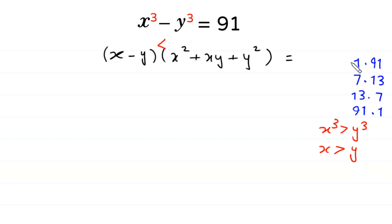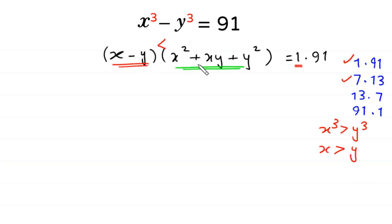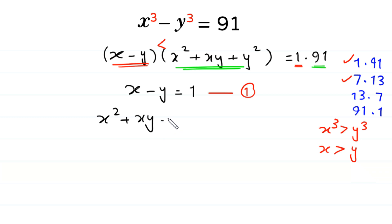We solve for 1 times 91 and 7 times 13. First, Case 1: we factorize 91 as 1 times 91. The smaller factor gives x minus y equal to 1 — we name this Equation 1. The greater factor gives x squared plus xy plus y squared equal to 91 — we name this Equation 2.